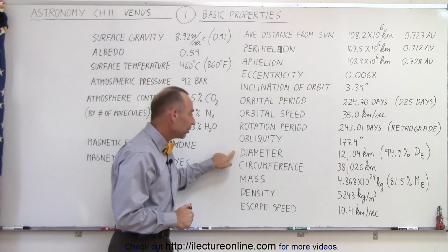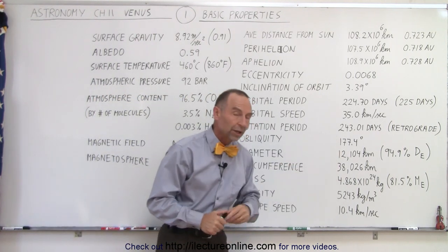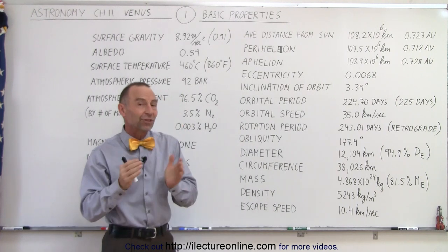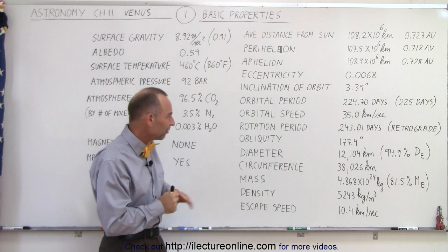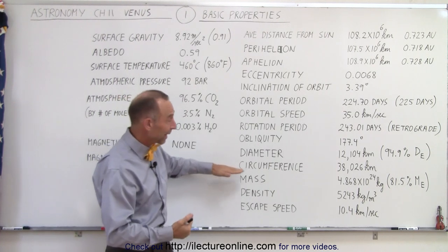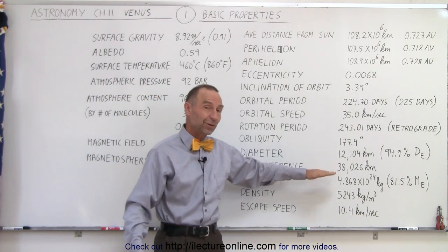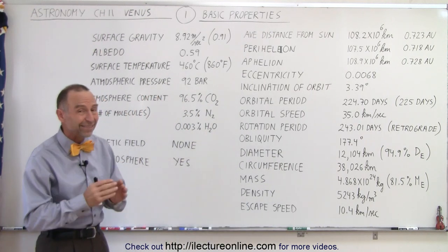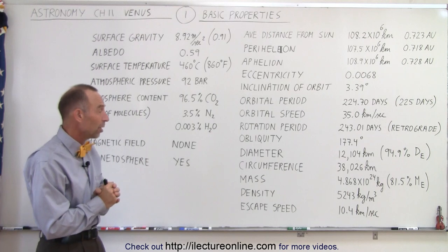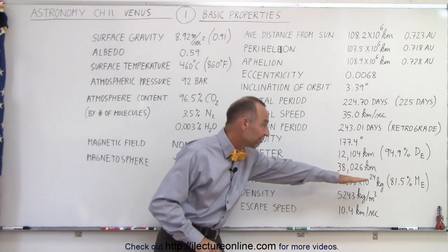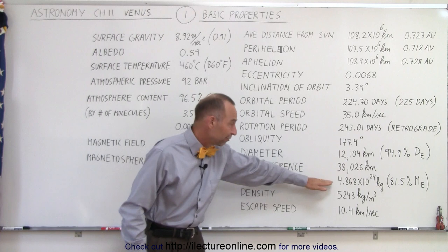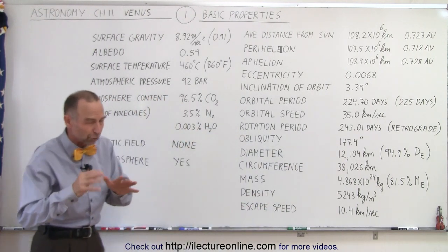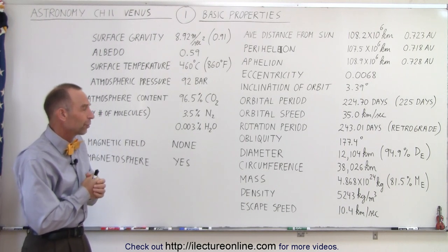The diameter of the planet is 12,104 kilometers, which is about 94.9 percent the diameter of the Earth, let's just call it 95 percent. The circumference, once around the planet, is 38,000 kilometers versus about 40,000 kilometers for the Earth. Mass-wise it's about 81.5 percent the mass of the Earth at 4.868 times 10 to the 24 kilograms.